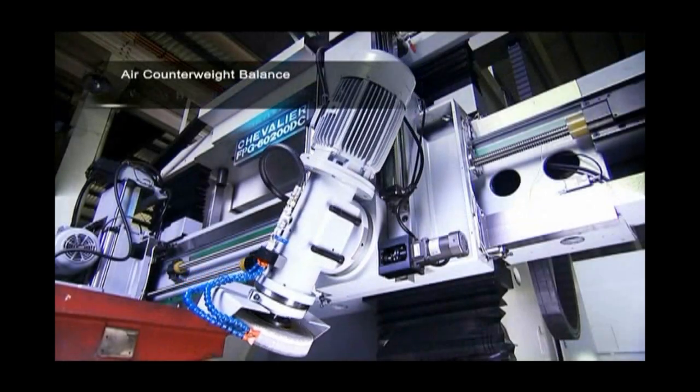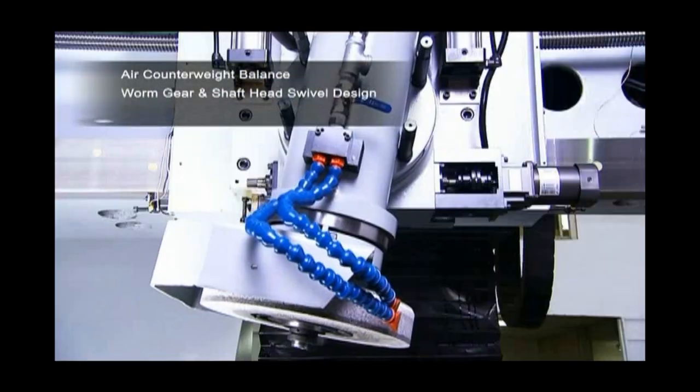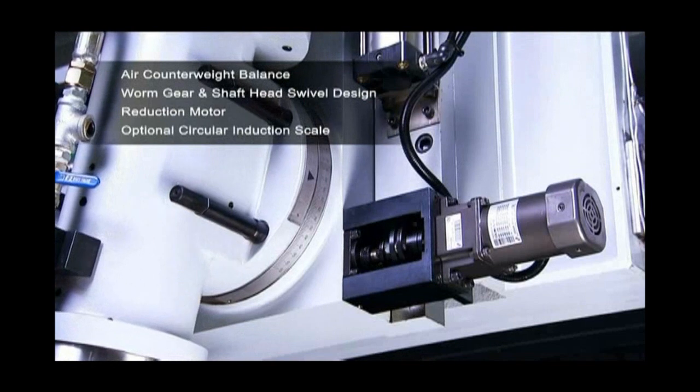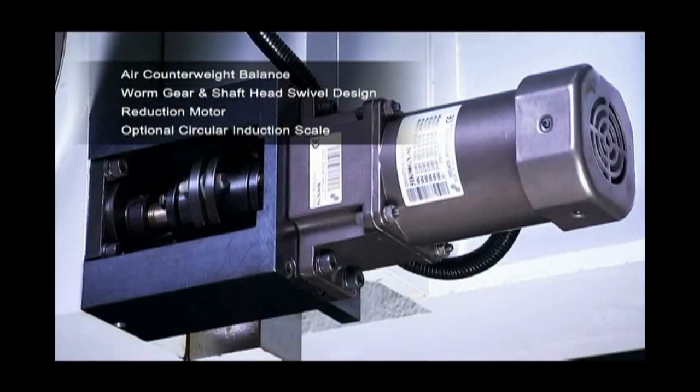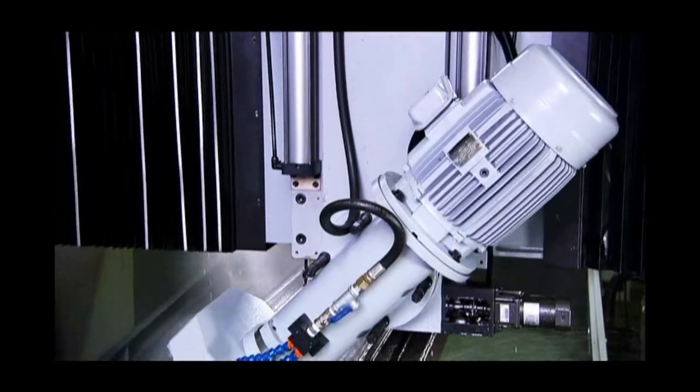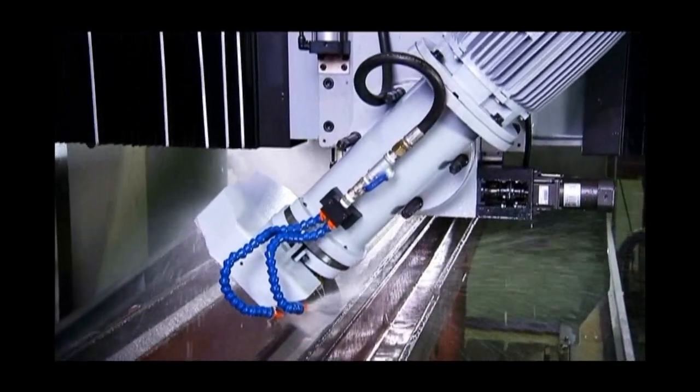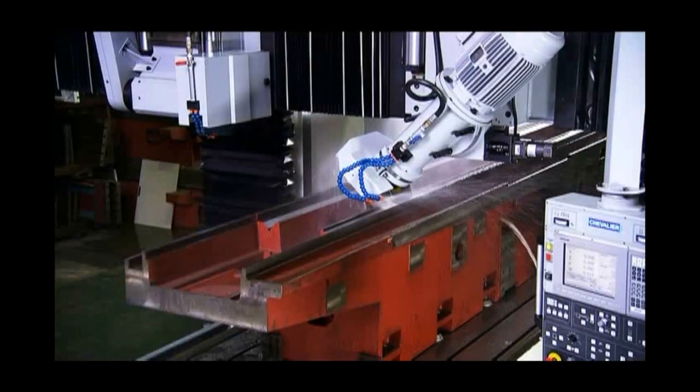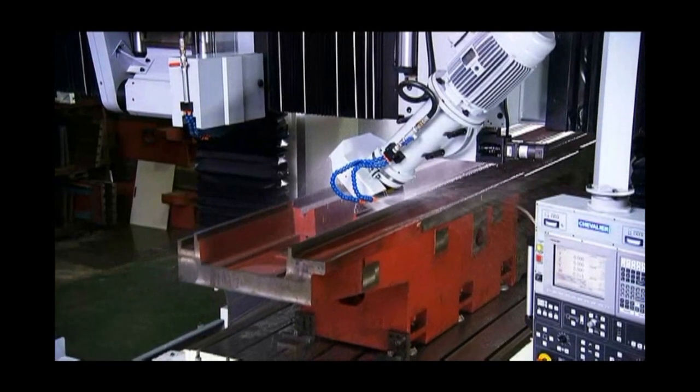The vertical grinding head features an NN-type double-row cylindrical roller bearing for maximum grinding performance, along with high-precision ball screw and air counterweight balance. This makes sure that all of the power is transmitted into cutting, and only this type of bearing can truly perform heavy cutting without the danger of significant chatter.